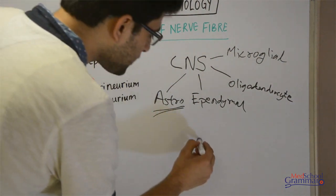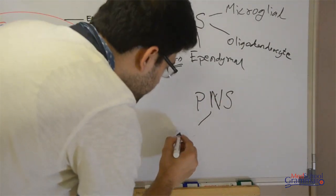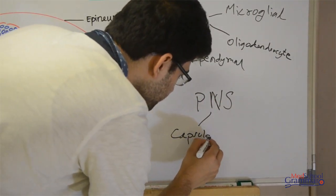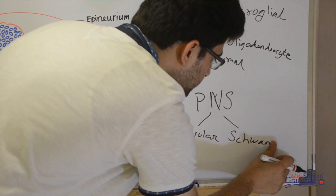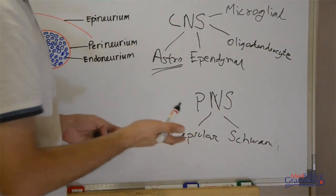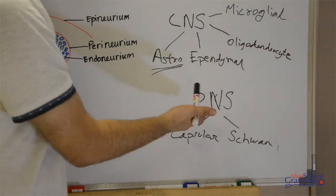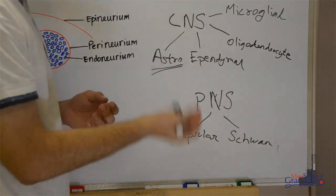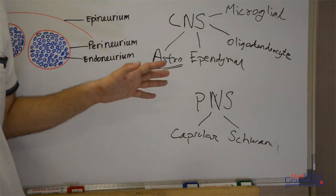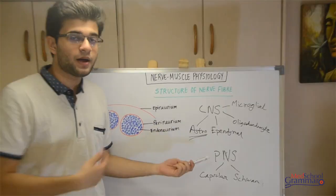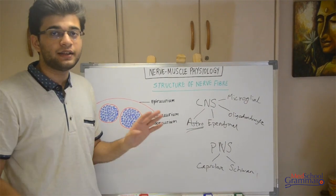In the peripheral nervous system, there are two types of cells: capsular cells and Schwann cells. Schwann cells surround the axon and are protective in nature. So these two cell types are protective. This covers the structure of the nerve fiber and the various supporting cells present in the nervous system.